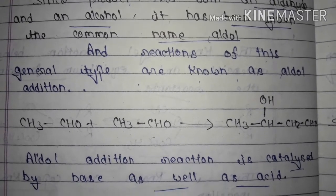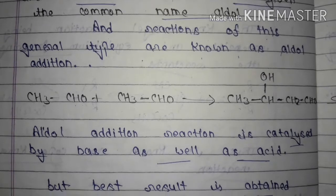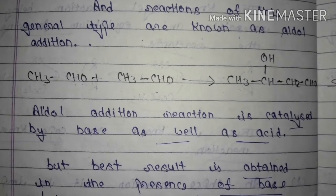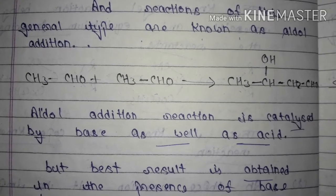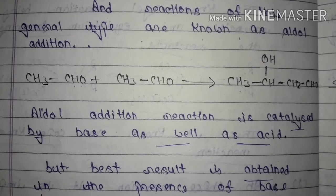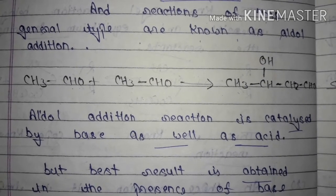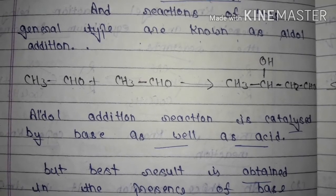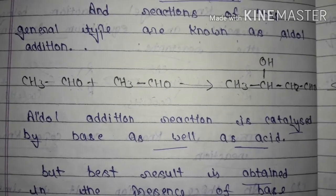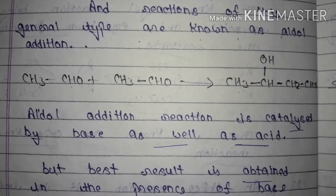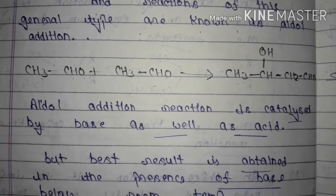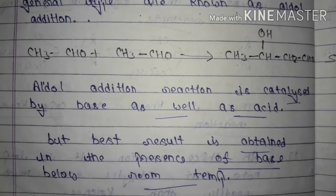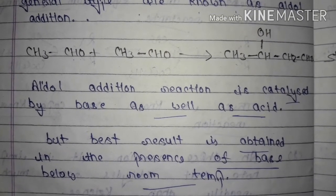Moving on to the reaction: CH3CHO + CH3CHO gives the product CH3CHOH-CH2CHO, as mentioned above. The aldol addition reaction is catalyzed by both base as well as acid — it can occur by either acid or base catalysis, as stated in the introduction.